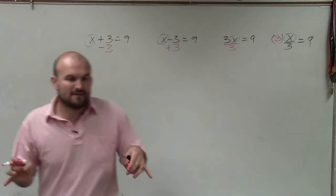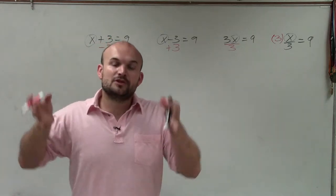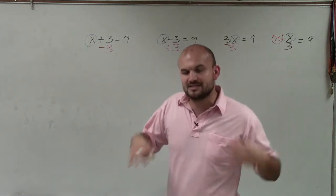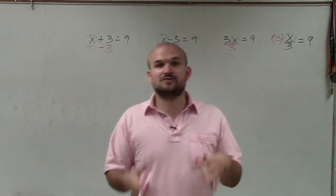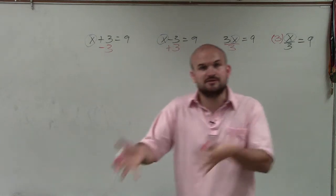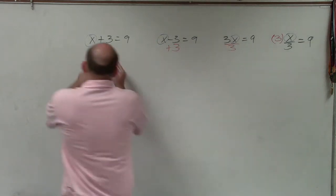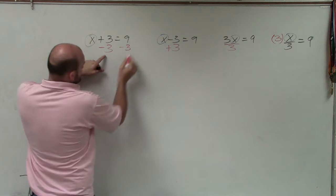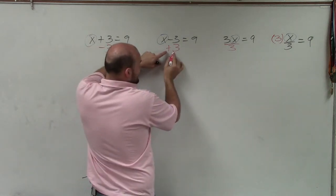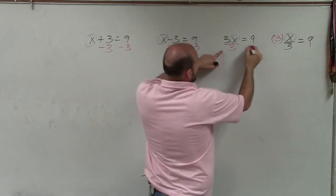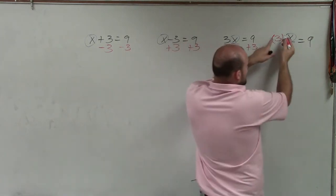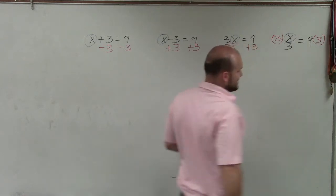So applying the inverse operation is important. But then we also have to make sure we apply the properties of equality. And what that means is to produce equivalent equations, to not have our answer change, whatever we do on one side of the equation, we have to apply to the other side of the equation. So if I subtract 3 over here, I have to subtract 3 over here. If I add 3 on the left side, I have to add 3 on the right side. If I divide by 3 on the left side, I have to divide by 3 on the right side. And if I multiply by 3 on the left side, I have to multiply by 3 on the right side.